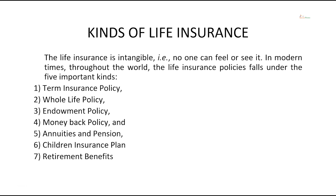Now, coming to the kinds of life insurance. Life insurance is intangible — no one can feel or see it. In modern times, throughout the world, life insurance policies fall under five important kinds: number one, term insurance policy; number two, whole life policy; number three, endowment policy; number four, money back policy; and number five, annuities and pension. Two more types worth mentioning are children's insurance policy and retirement benefits. Let us discuss each one.